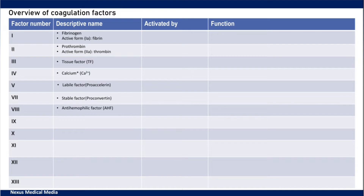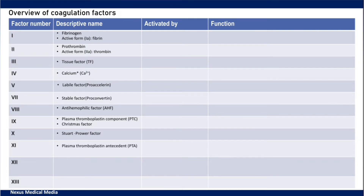Factor 7 is stable factor or proconvertin. Factor 8 is anti-hemophilic factor — some texts will say anti-hemophilic factor A, and factor 9 will be anti-hemophilic factor B. Factor 9 is also called plasma thromboplastin component, PTC, or Christmas factor. Factor 10 is Stuart-Prower factor. Factor 11 is plasma thromboplastin antecedent, PTA. Factor 12 is Hageman factor. Factor 13 is fibrin stabilizing factor.